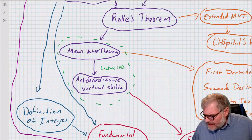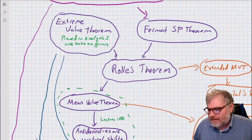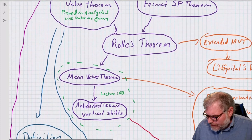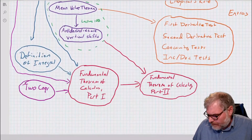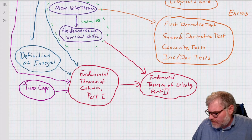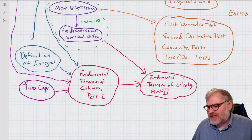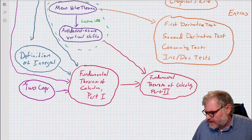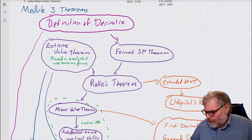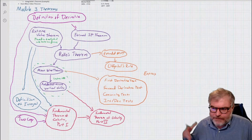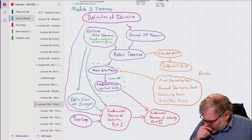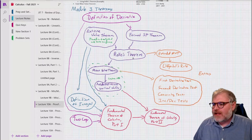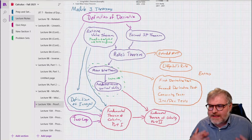Today's focus is going to be on Rolle's theorem and proof by contradiction — the method of proof by contradiction. Now in order to prove Rolle's theorem, we're going to use proof by contradiction. So what is proof by contradiction? If I wind up with a contradiction — a proposition that is both true and false — this is bad. If P implies Q and P implies not-Q at the same time, P must be false, because we don't want Q and not-Q to exist at the same time.